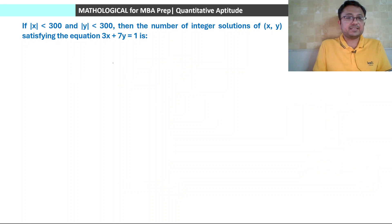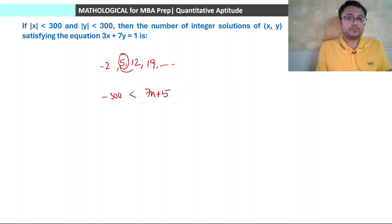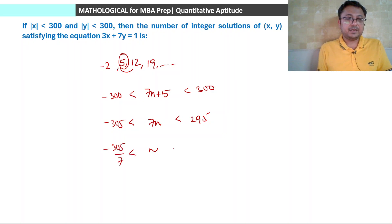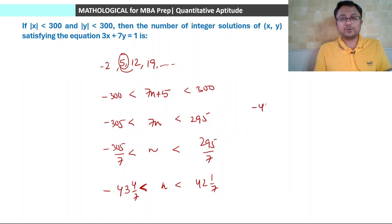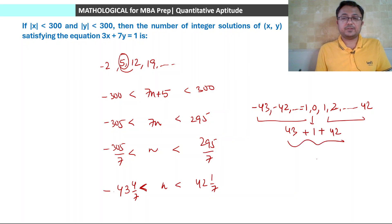Using the general term method: taking 5 as the value at n equals 0 with common difference 7, the general term is 7n plus 5, which must be strictly between minus 300 and 300. Subtracting 5: minus 305 less than 7n less than 295. Dividing by 7: minus 305/7 less than n less than 295/7, giving minus 43 and 4/7 less than n less than 42 and 1/7. So n ranges from minus 43 to 42 — that's 43 negative values, plus 0 for n equals 0, plus 42 positive values — total 43 plus 1 plus 42 equals 86 solutions.